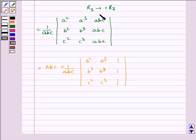Because we took ABC common from this column, this ABC gets cancelled with this ABC. So it becomes 1 and we are left with A square, A cube, 1, B square, B cube, 1, C square, C cube, 1.